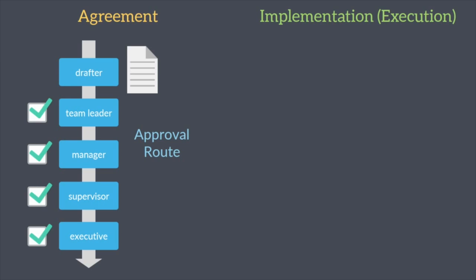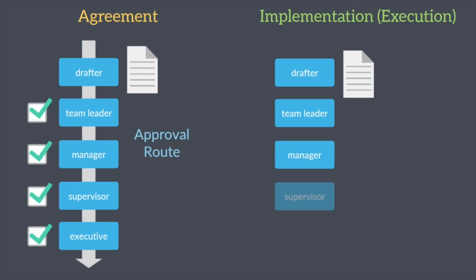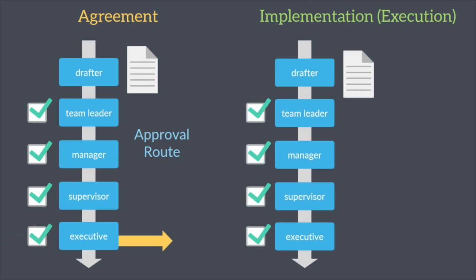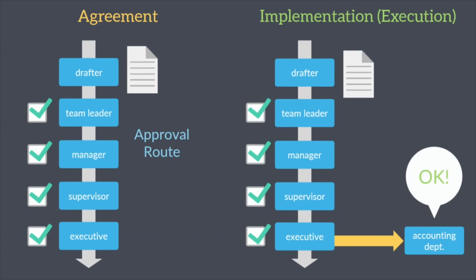On the other hand, implementation or execution approvals require the selection of an additional department after the final superior's confirmation. The additional department is called a processing department and will carry out the finalized decision. Thus, implementation approvals are used for actionable documents that will require a department to act upon their contents.